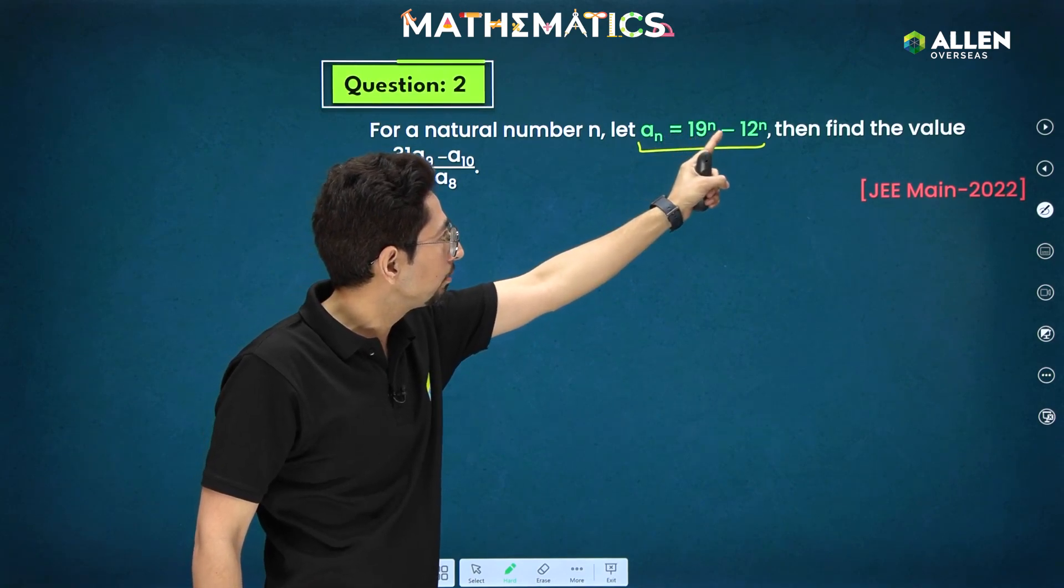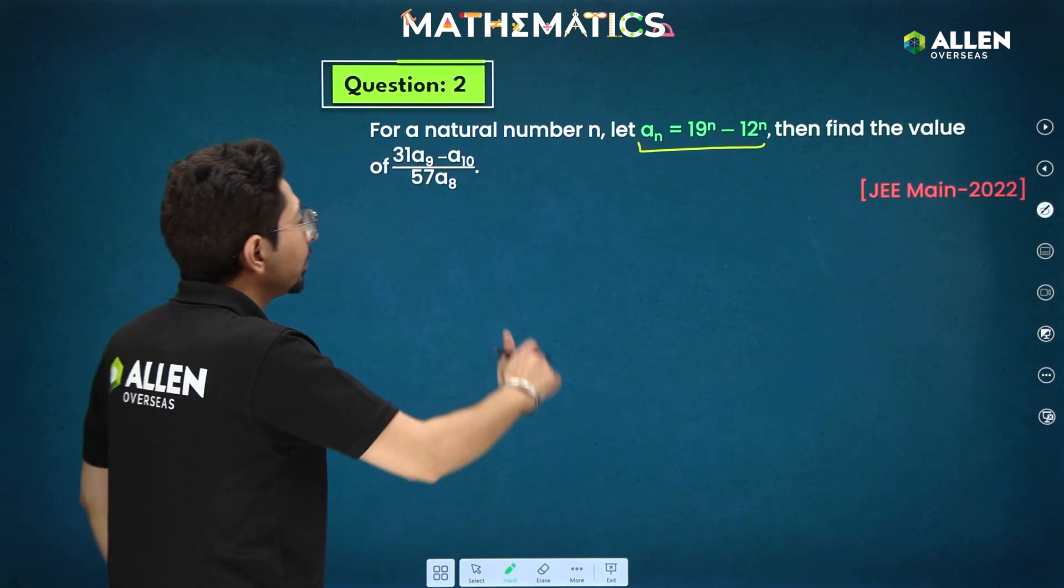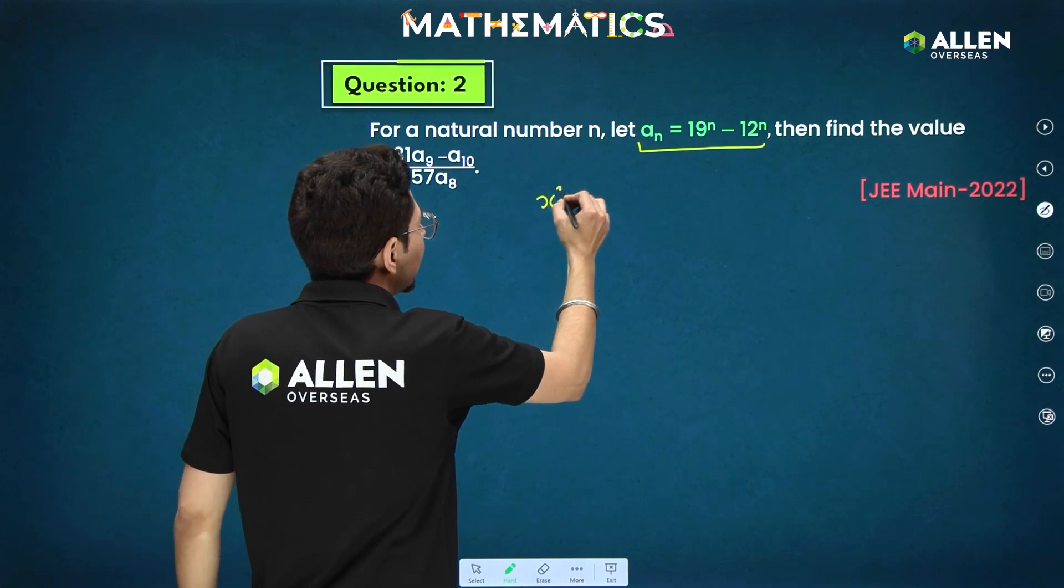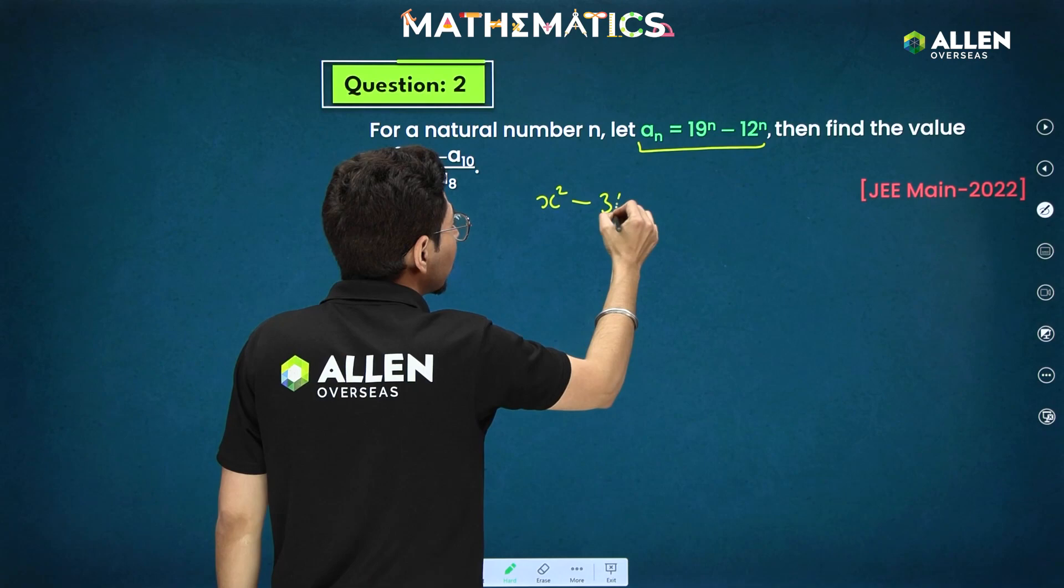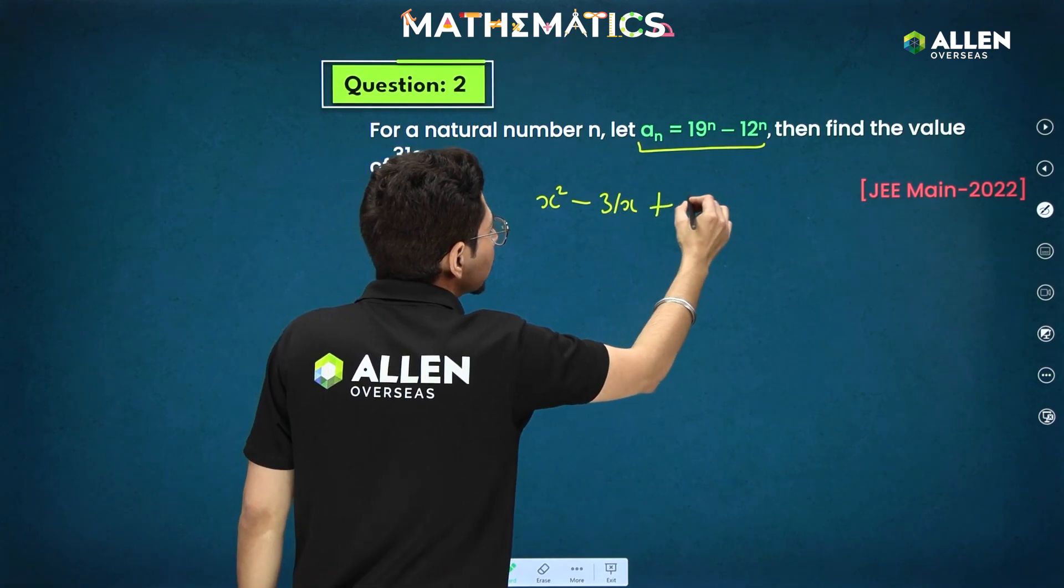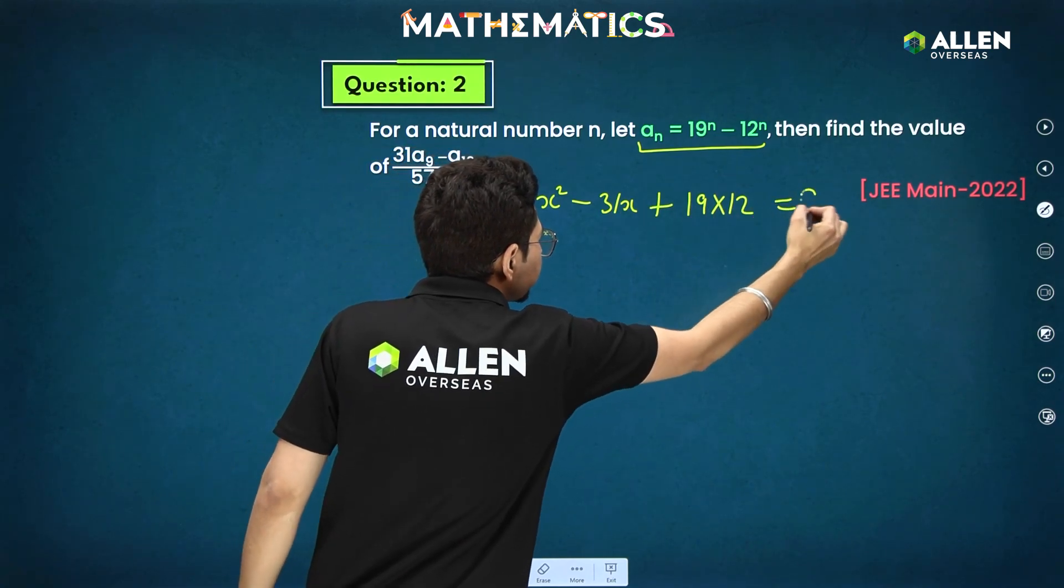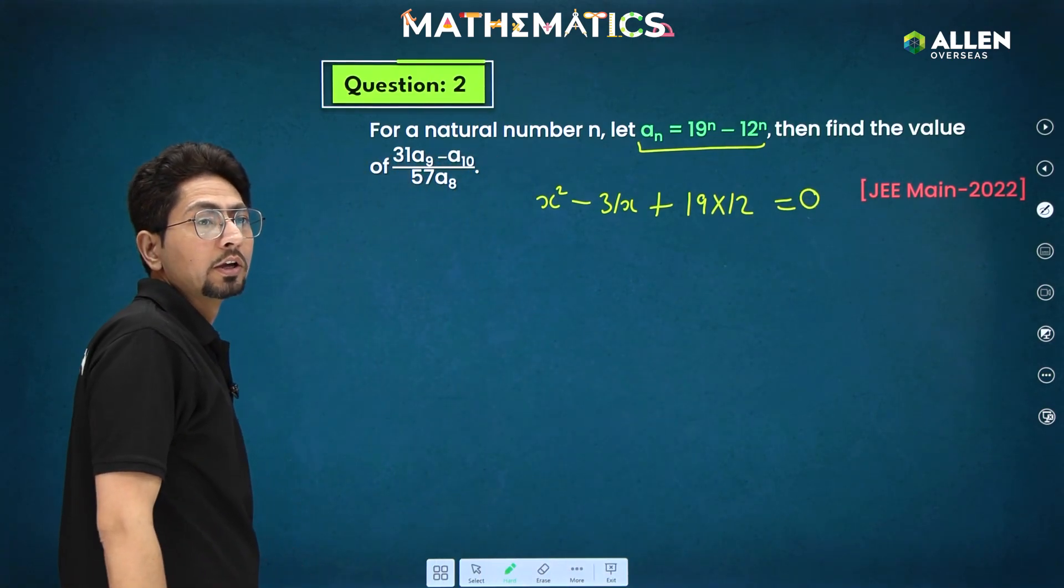So if I consider alpha is 19, beta is 12, what will be my quadratic equation? That will be simply x square minus sum of roots that will be 31 and product of roots that we can simply write 19 into 12. This is the quadratic equation.